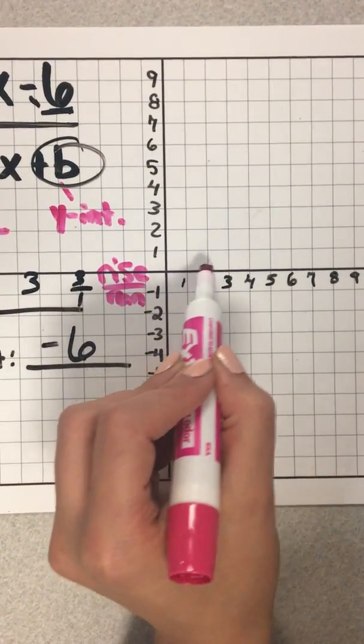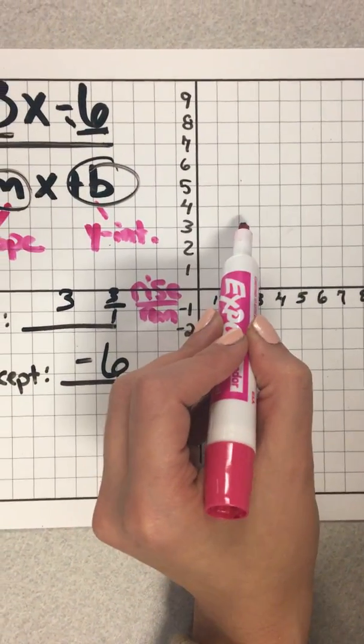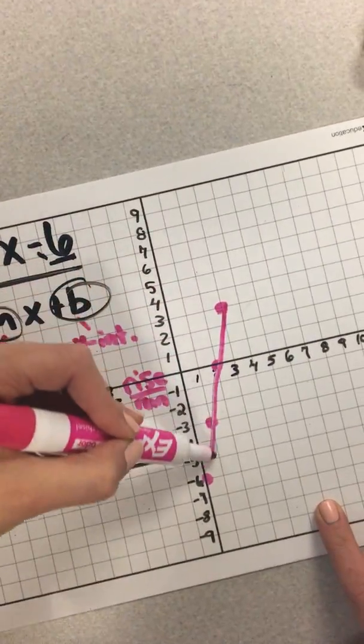Then I'm going to go up 3: 1, 2, 3 over 1. So our third point, we'll do one more. 1, 2, 3 over 1. And now we have enough points to make a line.